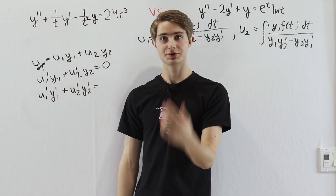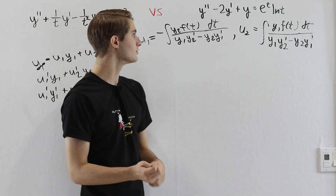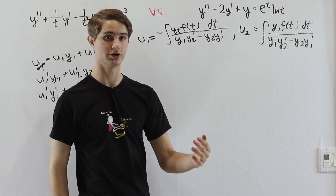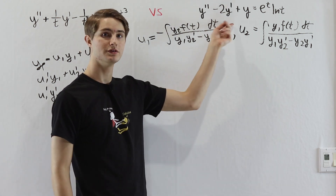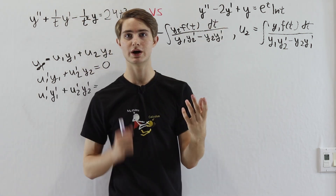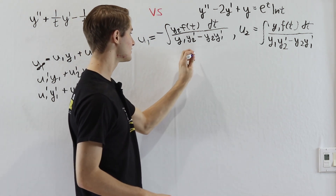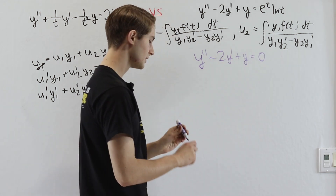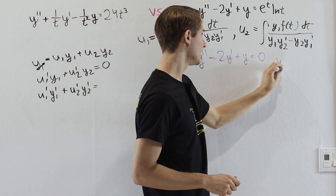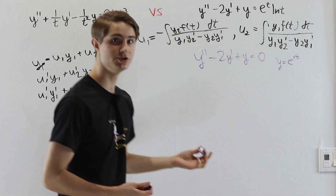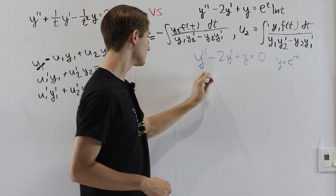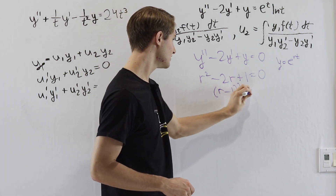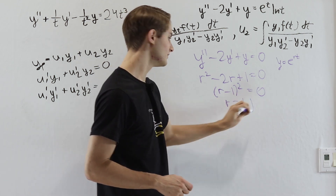For the second equation, no complementary solutions are given, so we first solve the homogeneous version: y'' − 2y' + y = 0. Setting y = e^(rt) gives the characteristic equation r² − 2r + 1 = 0, which factors as (r − 1)² = 0, giving r = 1 as a double root.